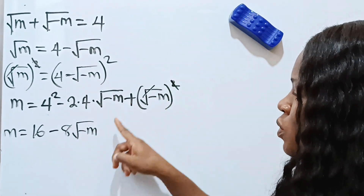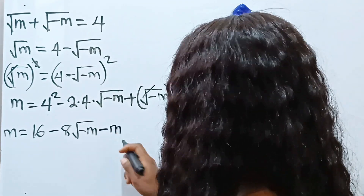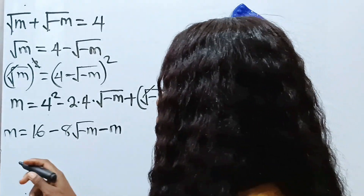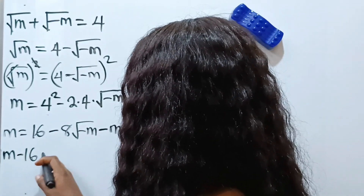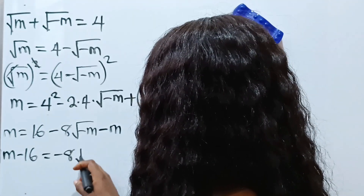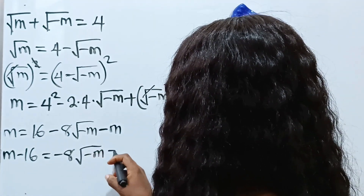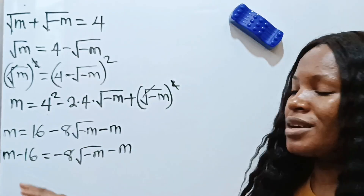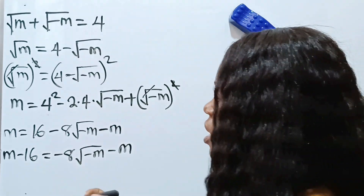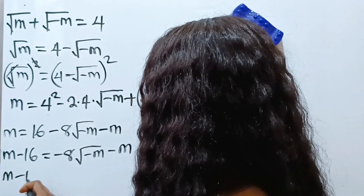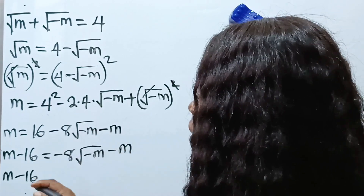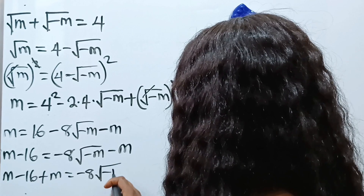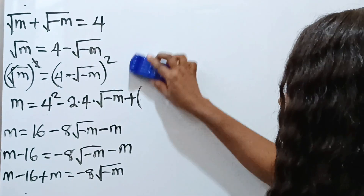So we have m equals 16 minus eight root of negative m, minus m. Now let's transfer terms to the other side. We get m minus 16 equals negative eight square root of negative m minus m. We also transfer the minus m across, so it becomes plus m on the left, giving us m minus 16 plus m equals negative eight square root of negative m.